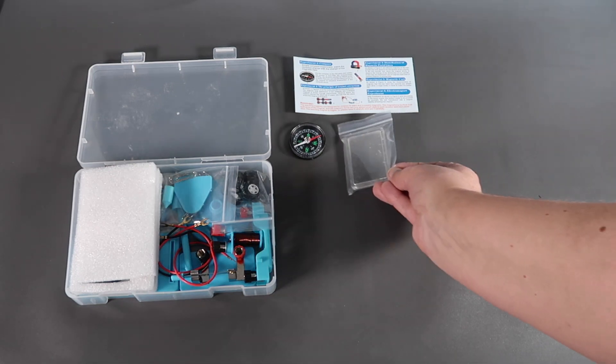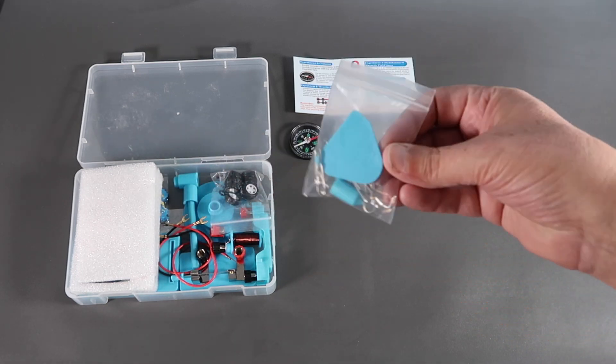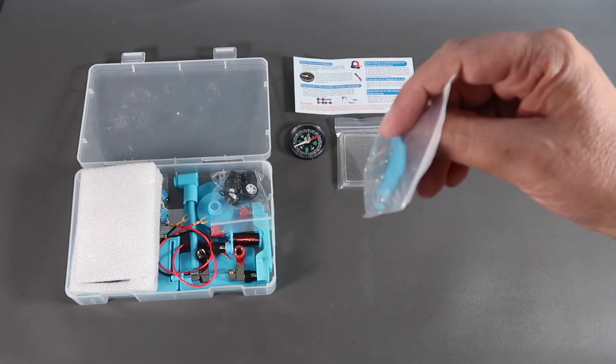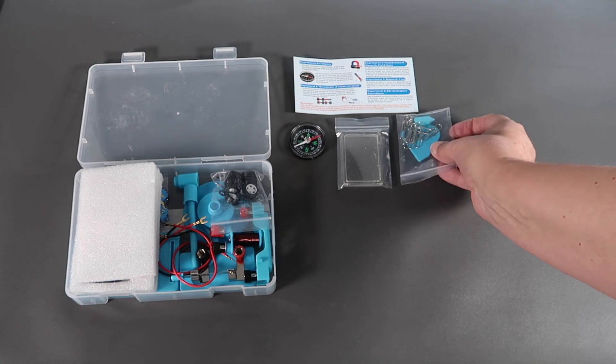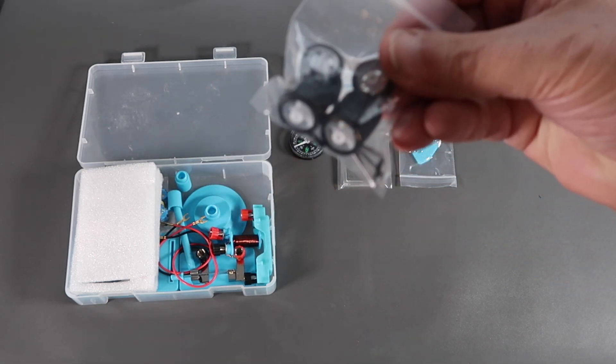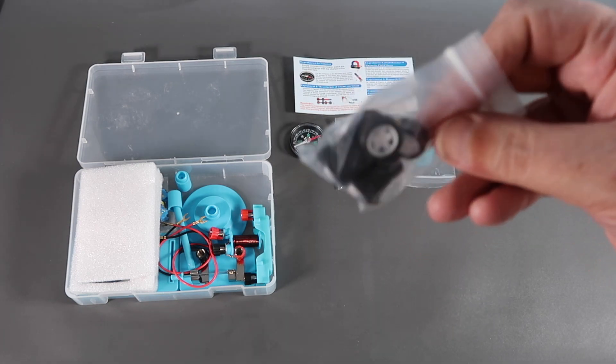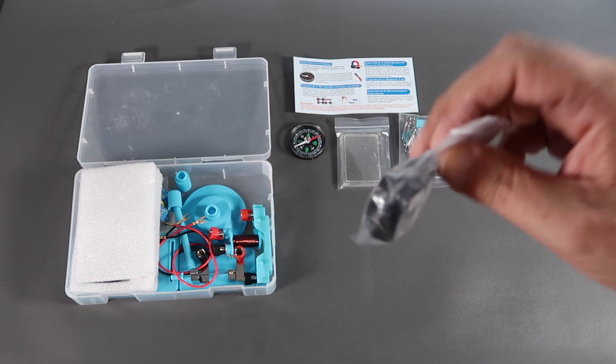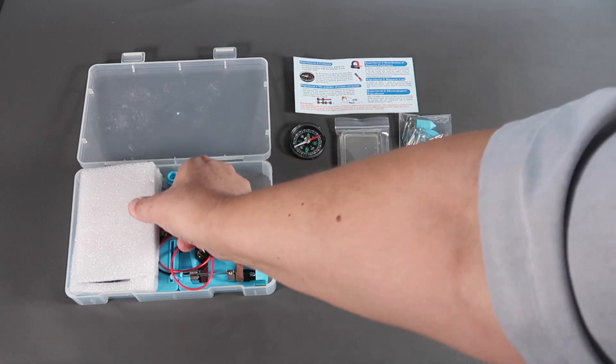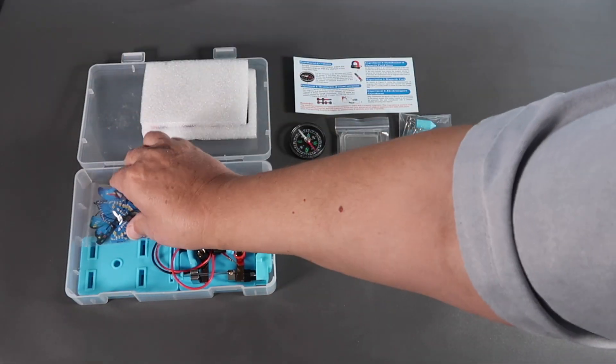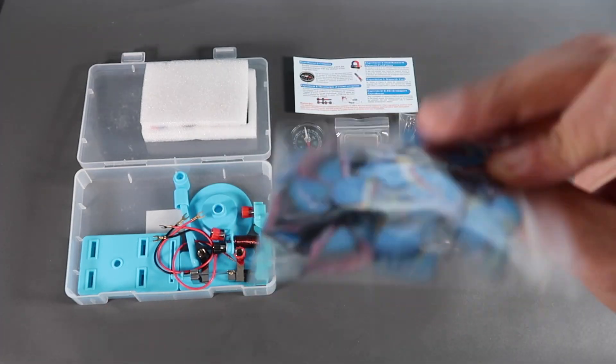A couple of plastic parts and a bundle of paper clips, some wheels. We're going to make a little car shortly, a bag of butterflies with little magnets on.